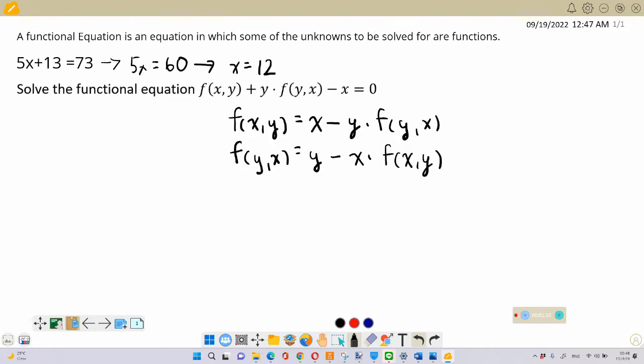Now I can see that if I take this f(x,y) I can substitute it into my first equation. This result will give me f(x,y) is equal to x minus y times the quantity y minus x times f(x,y).